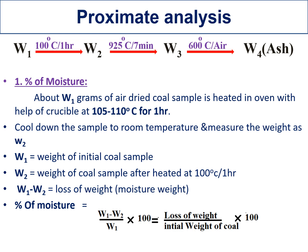Let's start the analysis. First, we know the given fuel sample weight — for example, we have w1 grams of coal fuel. To determine the moisture percentage: w1 grams of air-dried coal sample is heated in an oven with the help of a crucible at 105 to 110 degrees centigrade for one hour. At 110 degrees centigrade — which is above the boiling point of water — any moisture present in the coal will be evaporated.